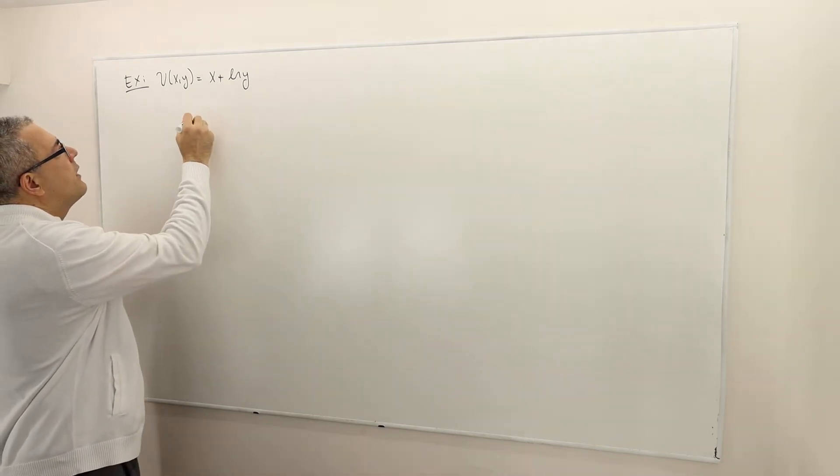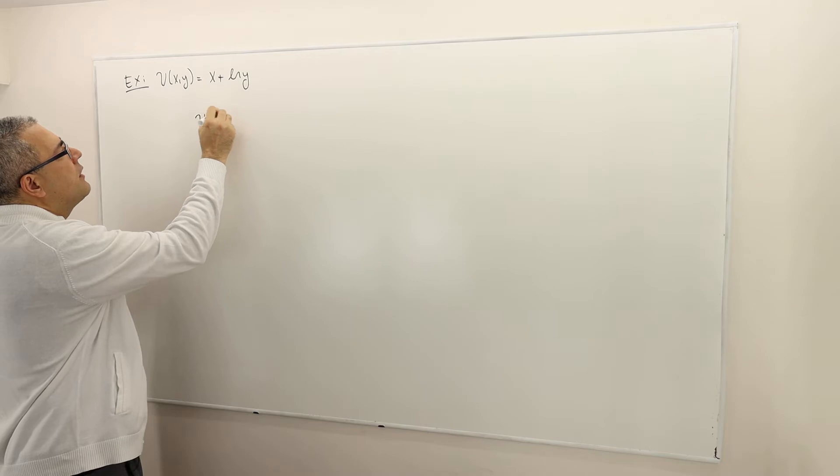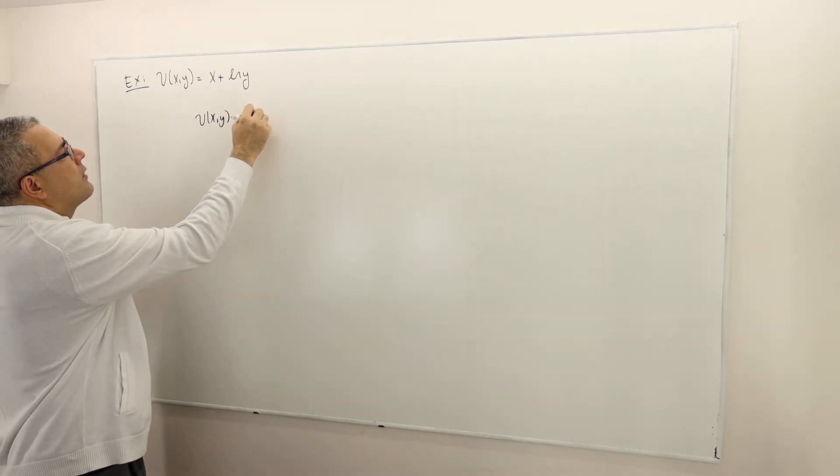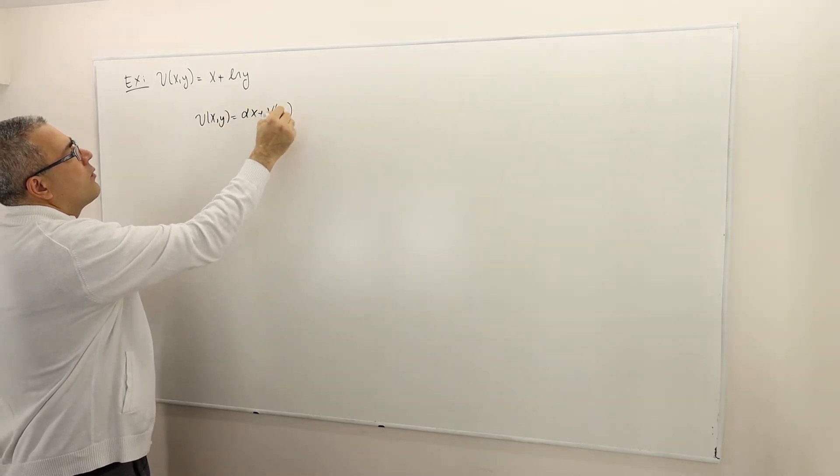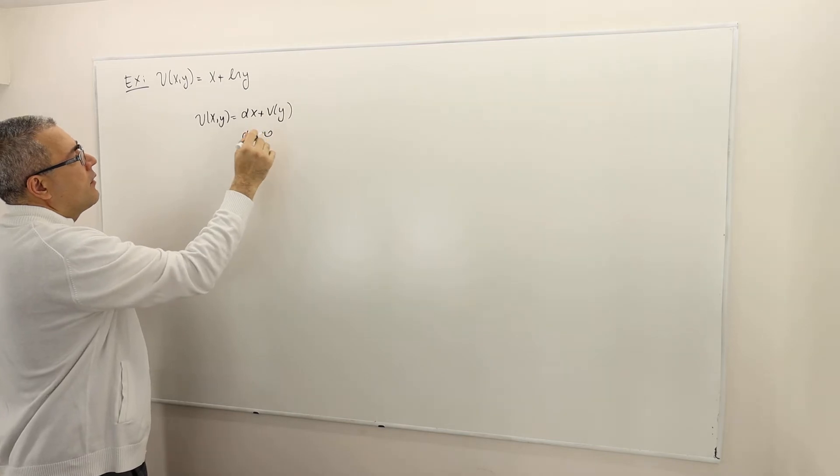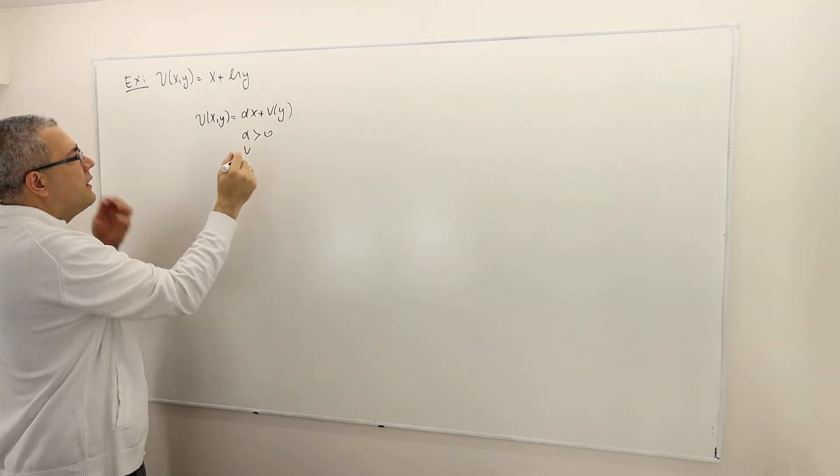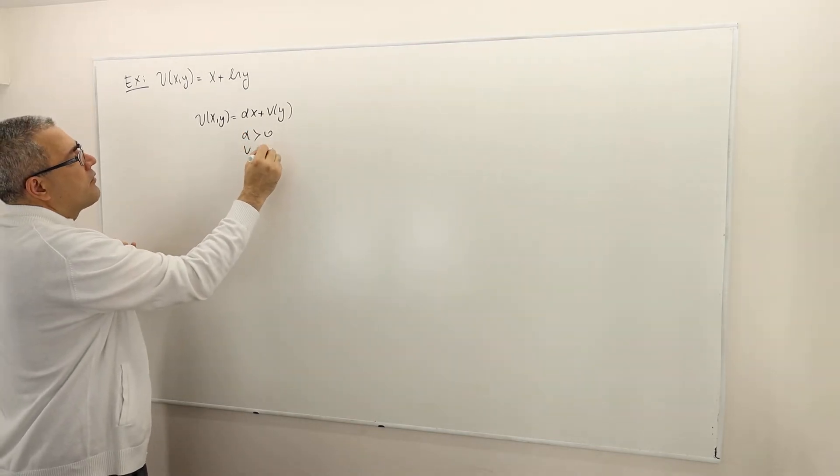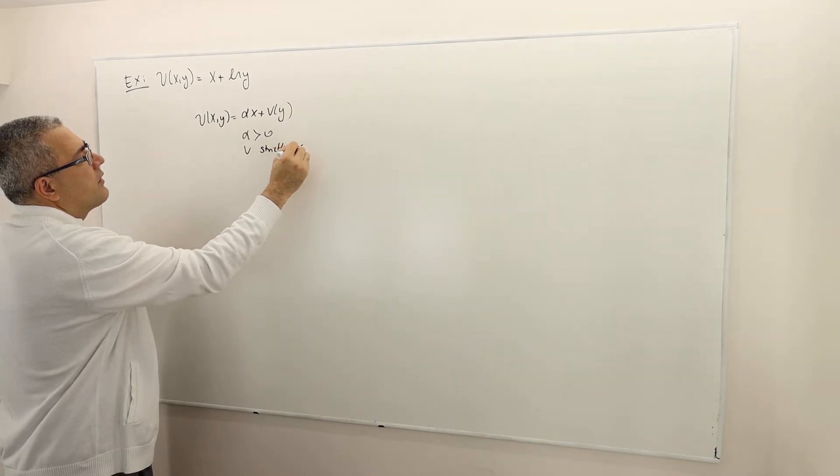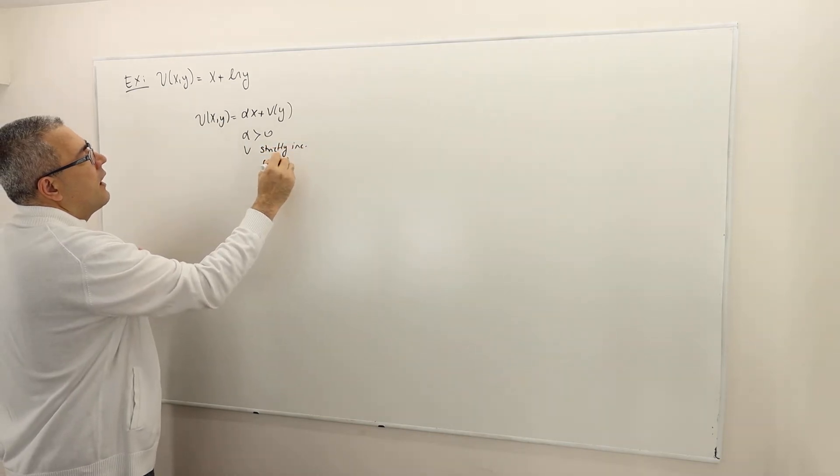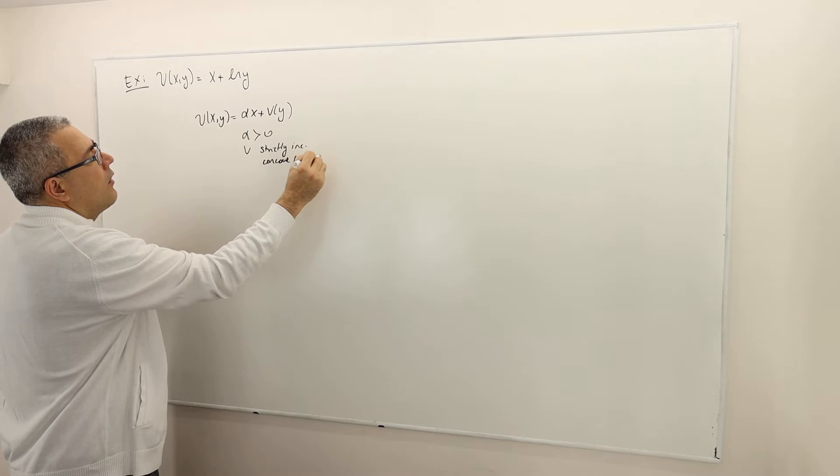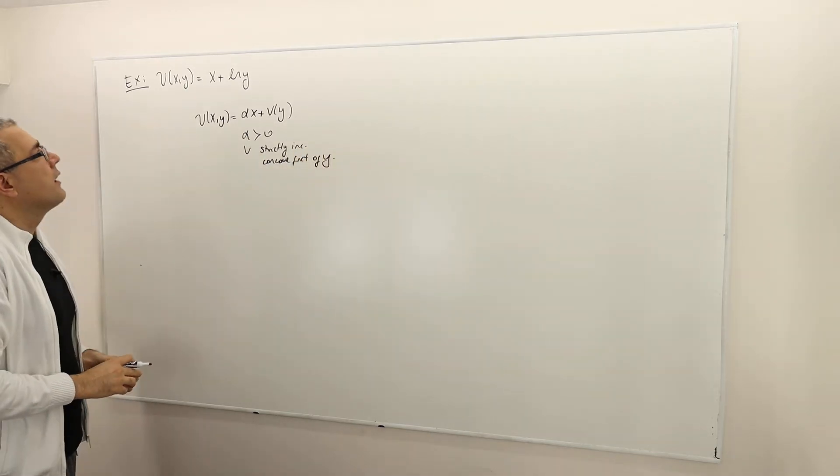A more general form is u(x,y) equals alpha x plus v(y), where alpha is some positive number and v is a strictly increasing, strictly concave function of y.